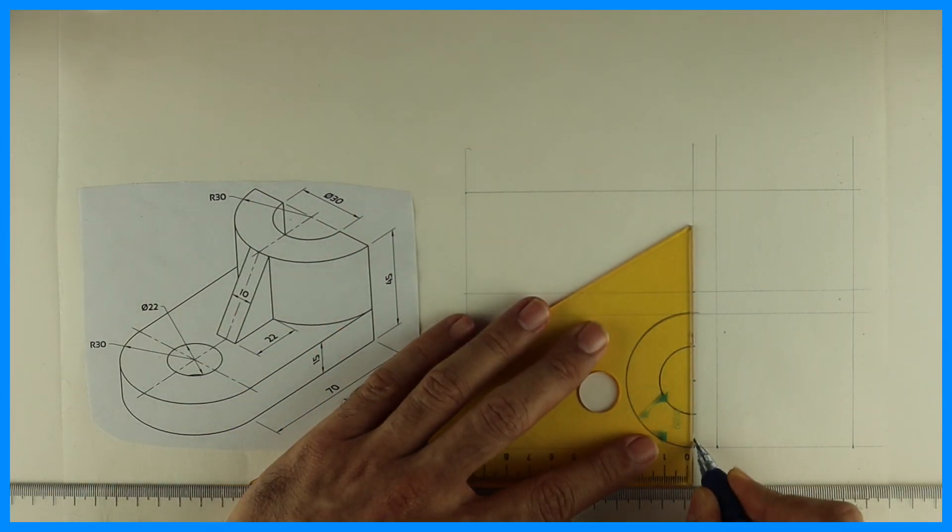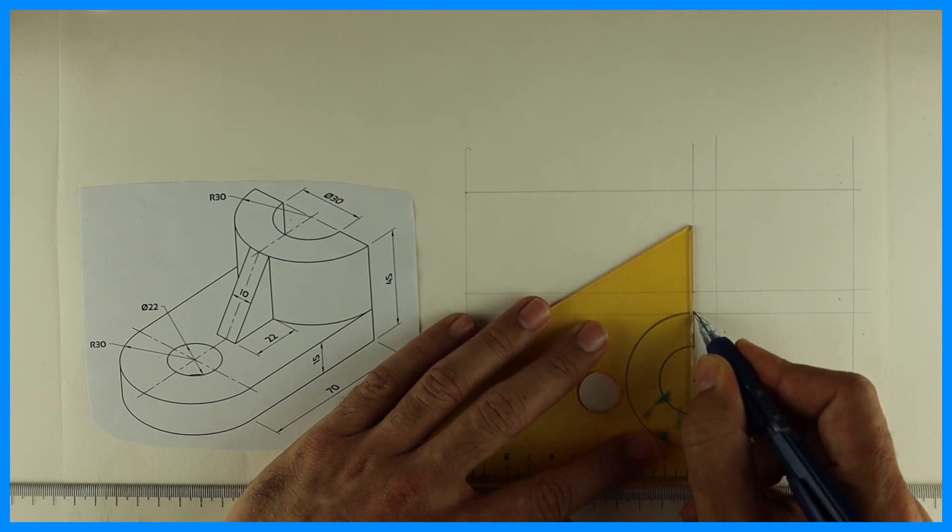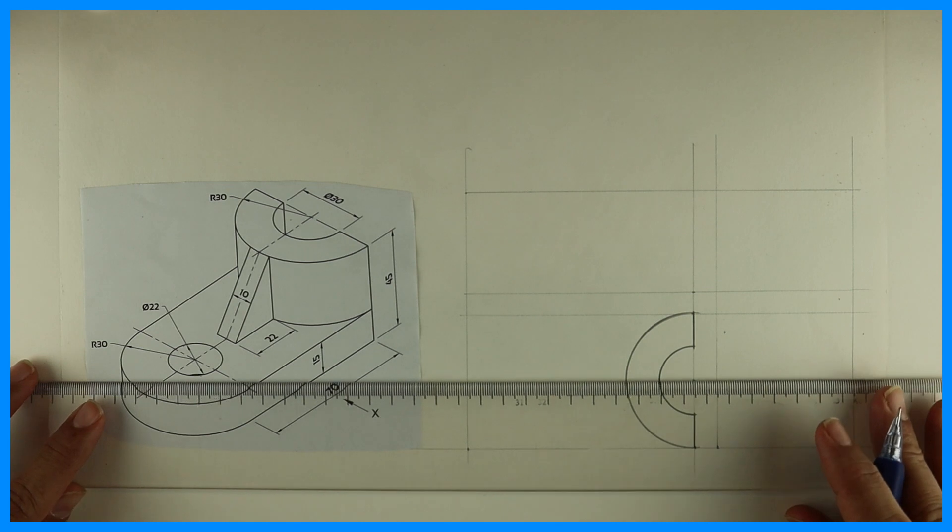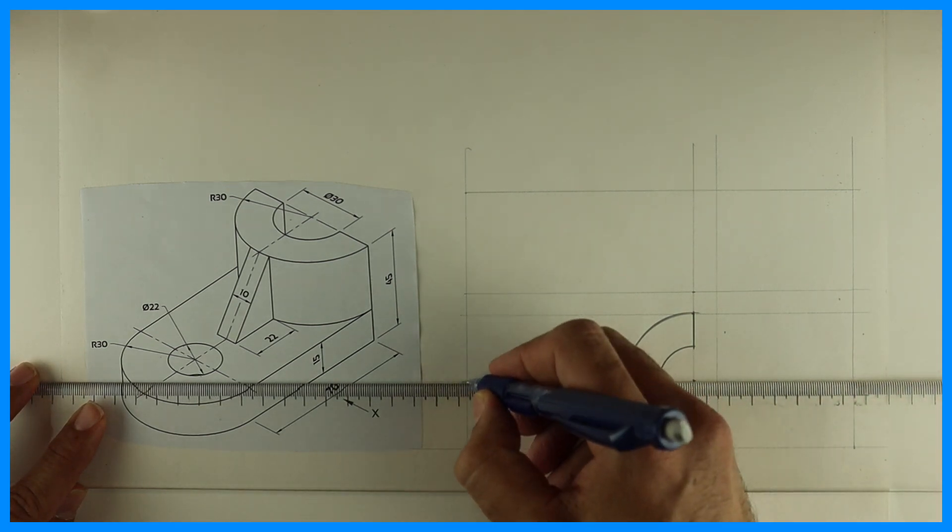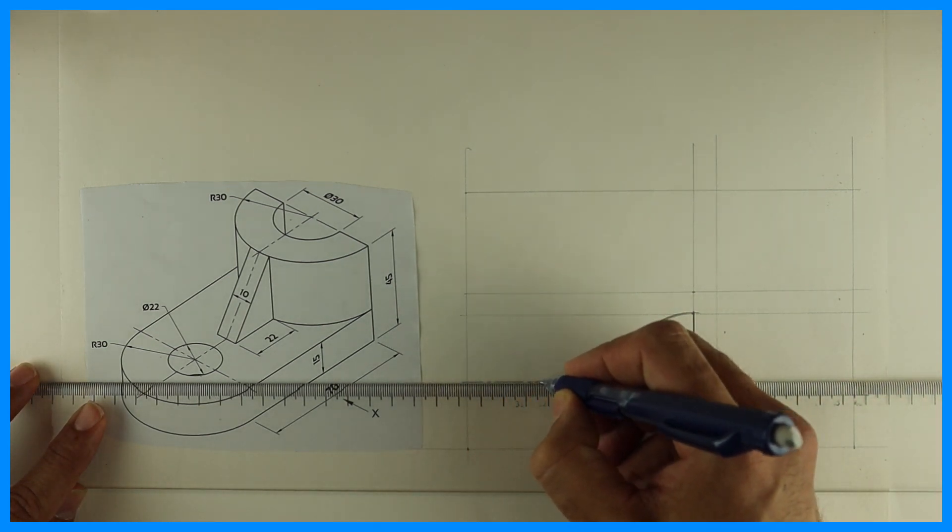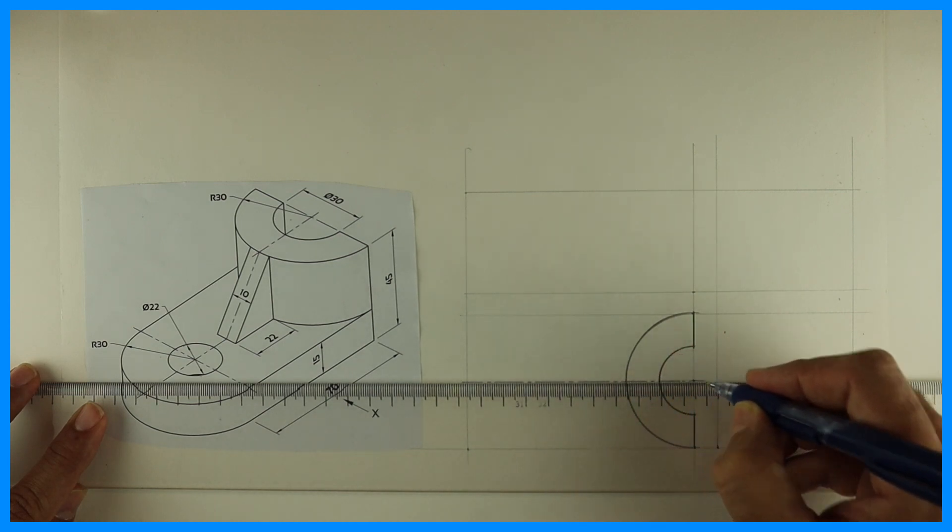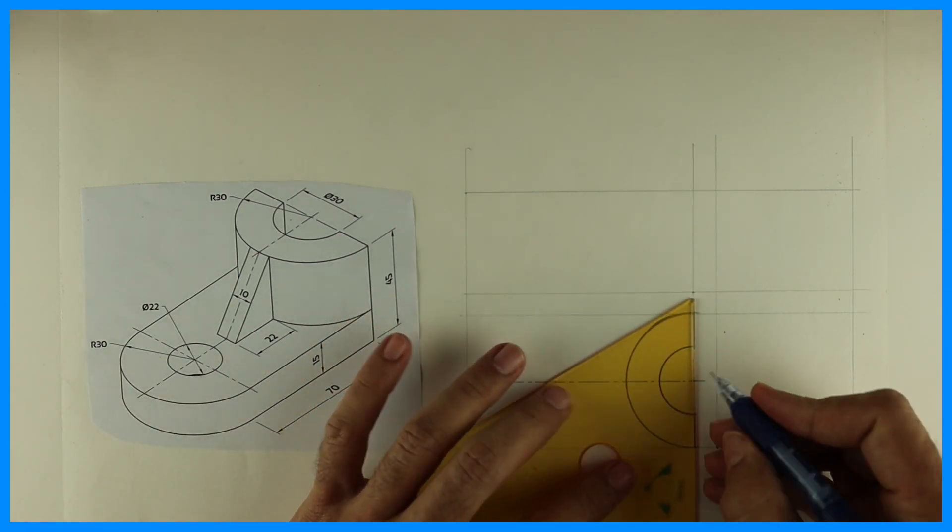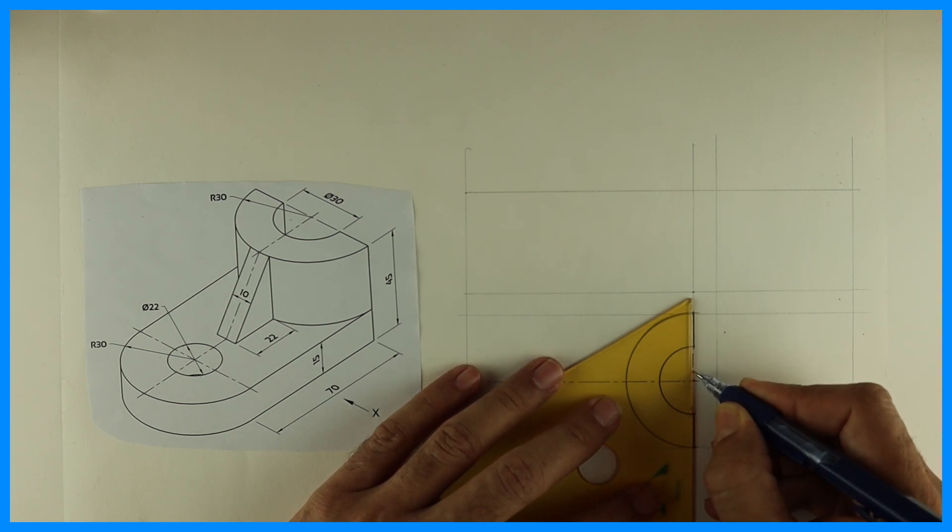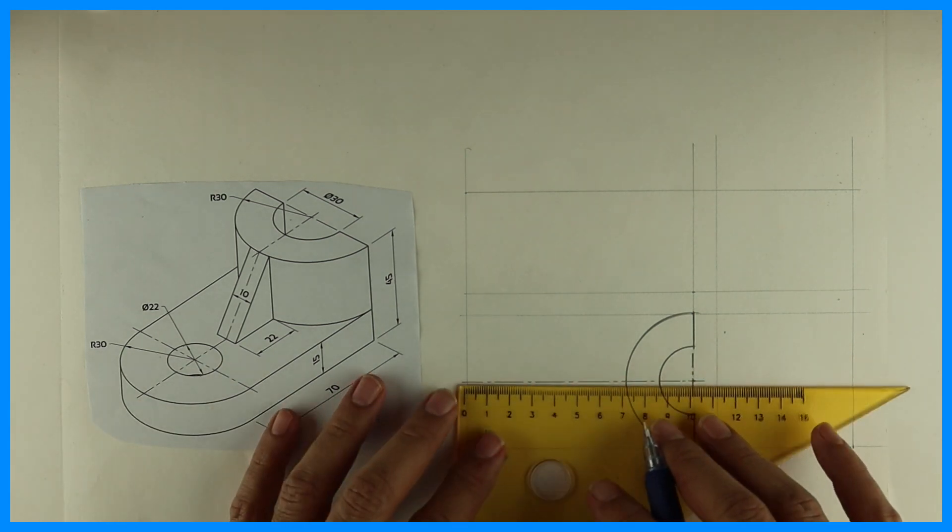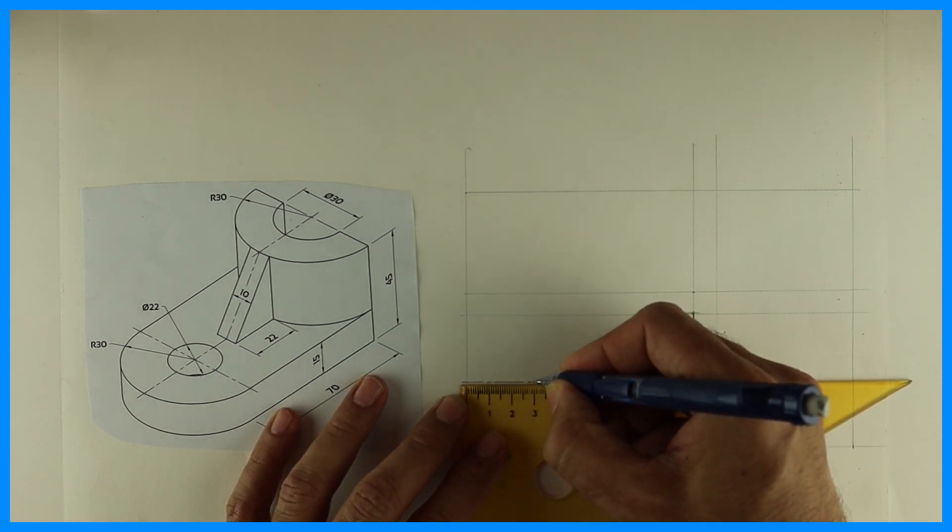Then you draw a vertical line. After that you draw a center line. Then radius 30, so you take 30.